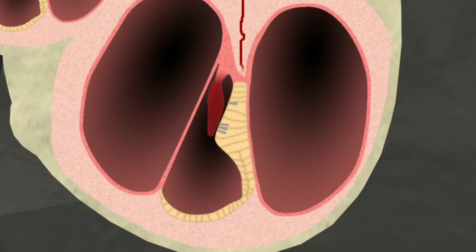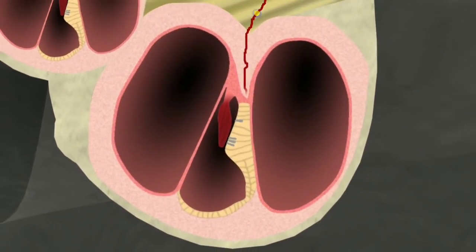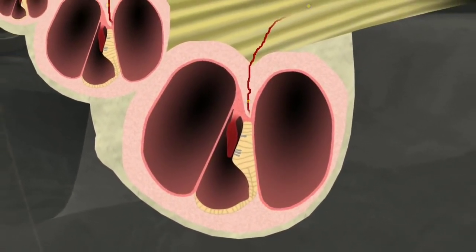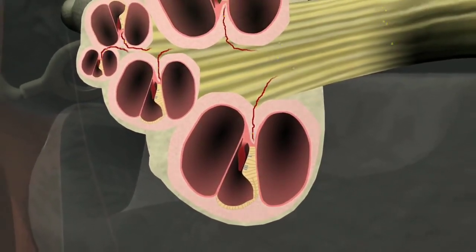This shearing action causes the stereocilia to bend, which opens the ion gates, leading to chemical changes and a resulting electrical charge inside their cells. These charges make a neural impulse which travels along the auditory nerve to the brain and is interpreted as sound.